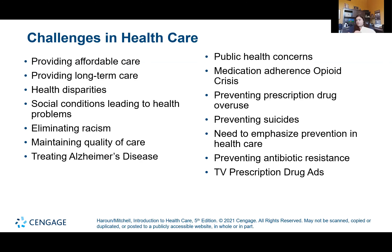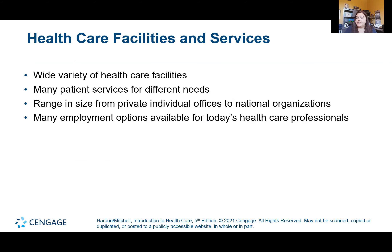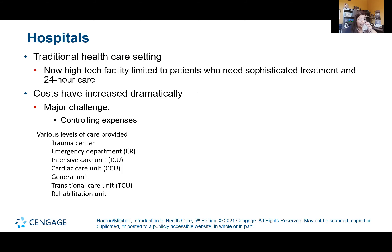Healthcare facilities and services include many different types that help patients with different needs — they may be private offices or national organizations. We generally always think of hospitals as the most traditional setting, but we're transitioning out of hospitals a lot. Hospitals are really limited to patients who need 24-hour care — they're very expensive. These patients may initially go to the ER and then need cardiac care units, intensive care units, a general unit, or a rehabilitation unit.